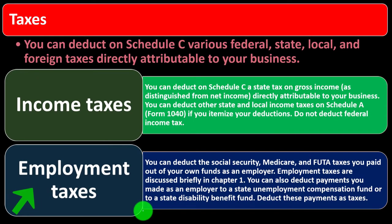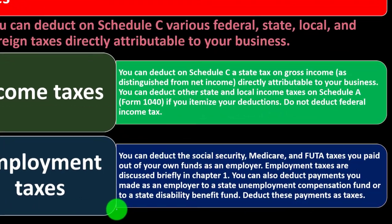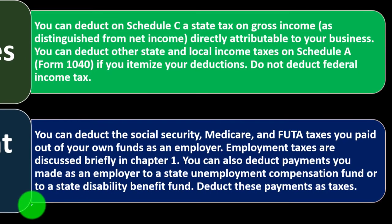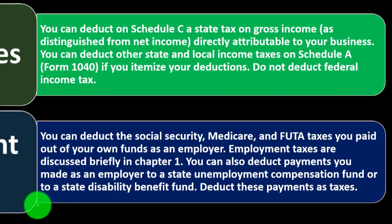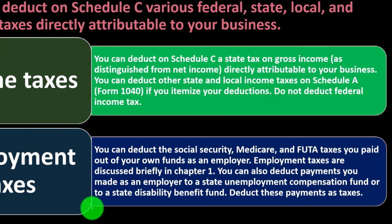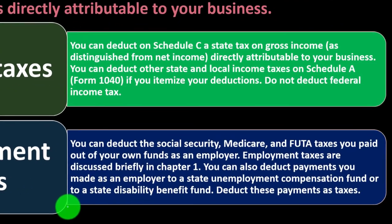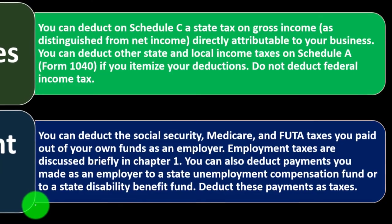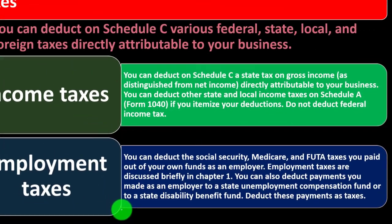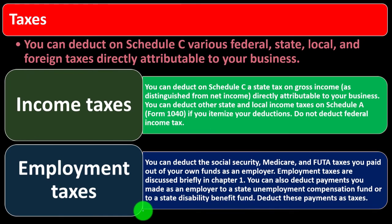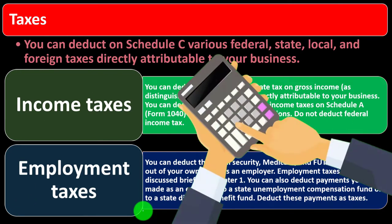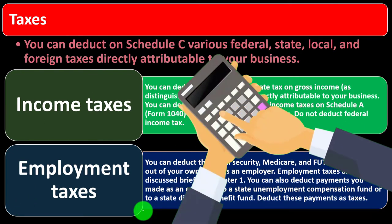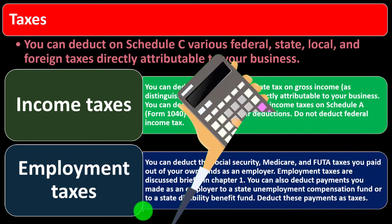For employment taxes, you can deduct the Social Security, Medicare, and FUTA taxes you paid out of your own funds as an employer. You can also deduct payments made as an employer to state unemployment compensation funds or state disability benefit funds — deduct these as taxes. Calculating employment taxes requires understanding payroll.